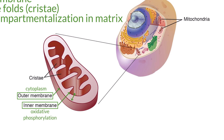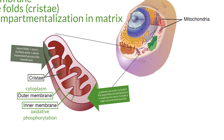The tiny intermembrane space is where concentration gradients are built to be used for this process, which is good that it is small because the gradient can be built relatively quickly. In addition, the internal cristae folds of the inner membrane provide more surface area for oxidative phosphorylation to occur.